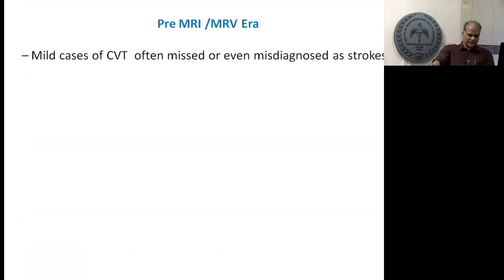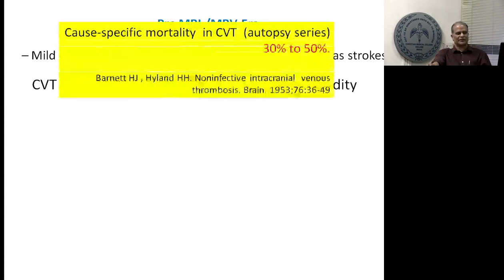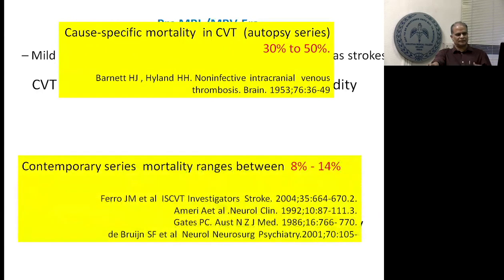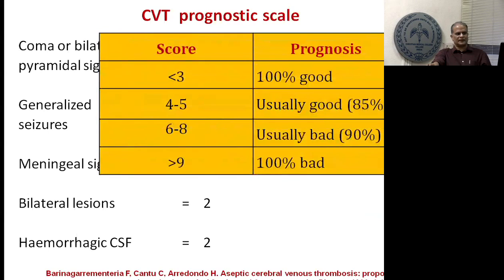In the pre-MRI/MRV era, CVT was associated with 30–50% mortality because pickup was poor. Since MRI came, pickup became faster, treatment changed, and mortality is now in the range of 8–14%. It still affects primarily a young population, and it is treatable if picked up early. There is a prognostic scale for CVT incorporating clinical picture, radiological findings, and CSF data — any score above 9 is a very bad prognostic sign with high mortality.